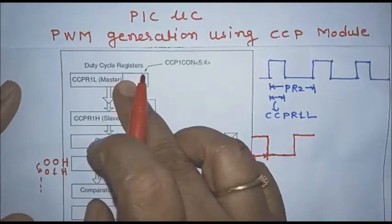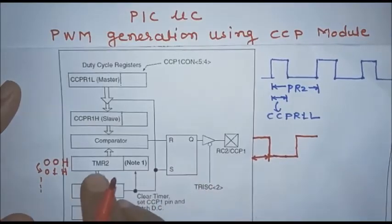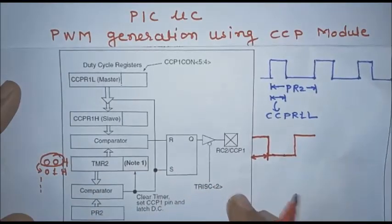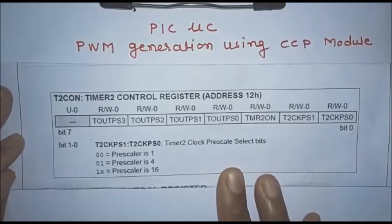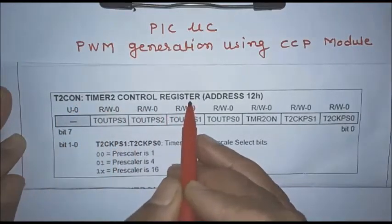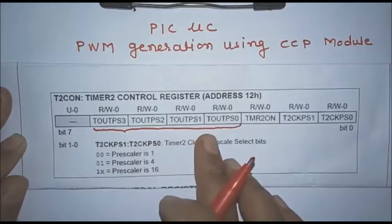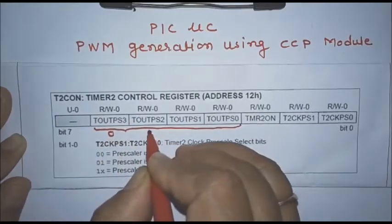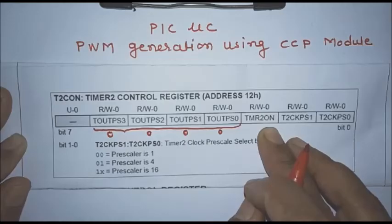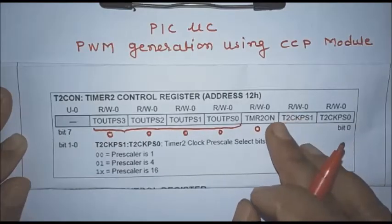The contents of CCPR1L are copied into CCPR1H. After completing one cycle, TMR2 is re-initialized to 00H and the whole cycle repeats. The registers required for PWM generation: the first is T2CON, the Timer 2 control register. The first 4 bits of T2CON are related to the postscaler value. We are not going to use the postscaler, so those bits are initialized to 0. The TMR2ON bit is used to turn Timer 2 on.